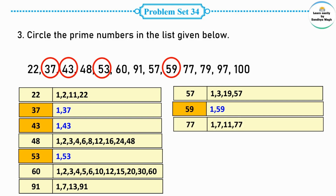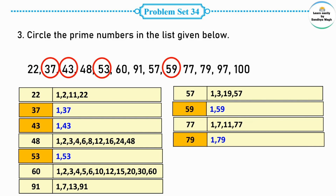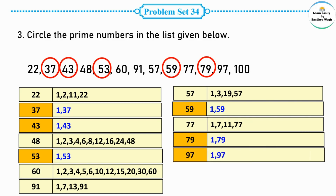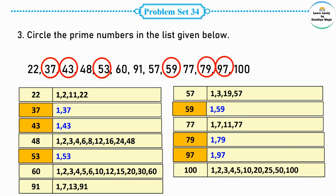Number 77 is a composite number with four factors. Number 79 is a prime number. Number 97 is also a prime number — it has only two factors. Number 100 is a composite number with many factors — so we do not circle it. The prime numbers identified are: 37, 43, 53, 59, 79, and 97.